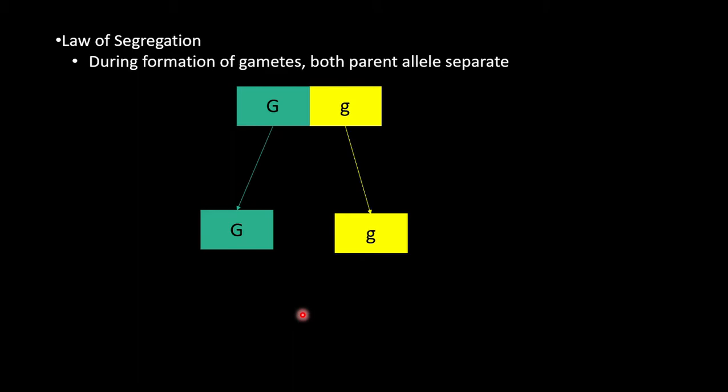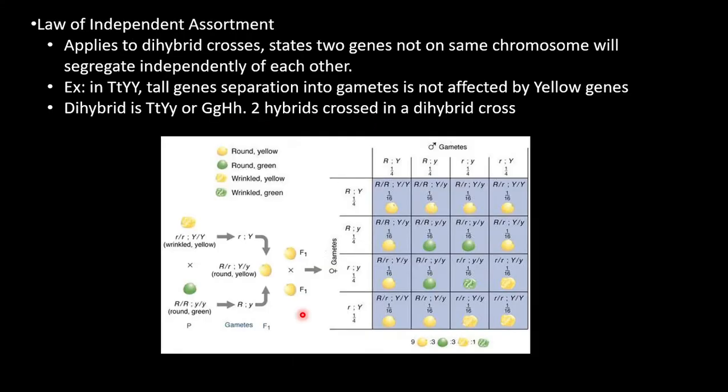The law of segregation states that during the formation of gametes, both parent alleles separate into those gametes. In this example, the offspring has a 50% chance of getting the recessive yellow gene or the dominant green gene from its parent.